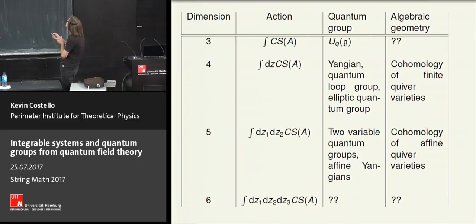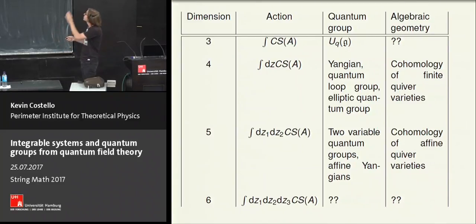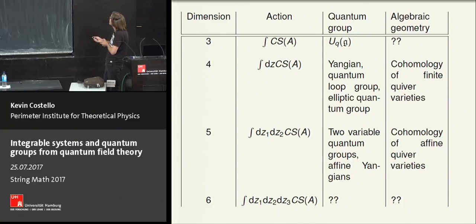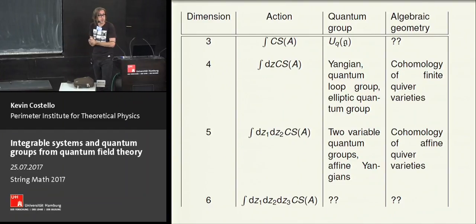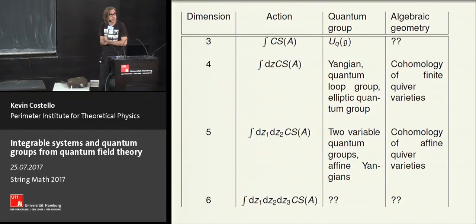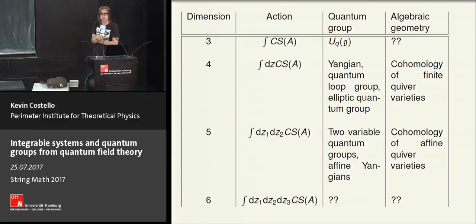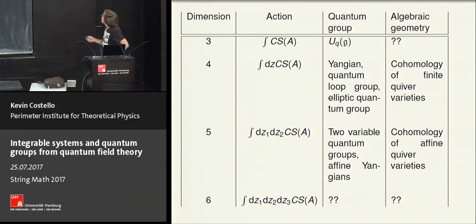I'm putting this in to indicate that what I'm discussing today is part of a larger program. The five-dimensional version I've studied in two recent papers, and this five-dimensional gauge theory is related to two-variable quantum groups which have come to prominence recently in mathematics, in particular in Andre's work on affine quiver varieties.